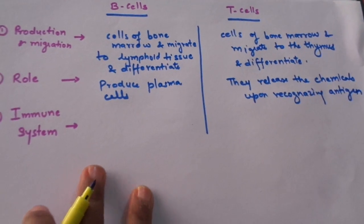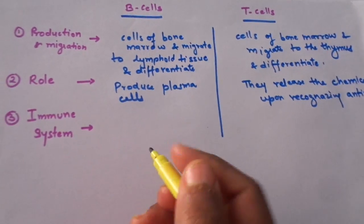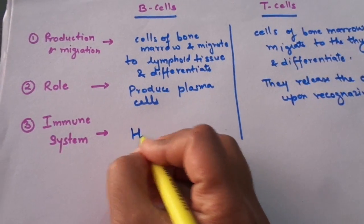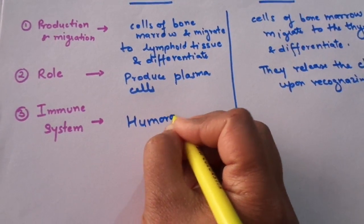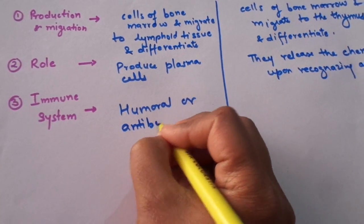The third major difference is which immune system both cells belong to. B cells are part of the humoral or antibody-mediated immune system.